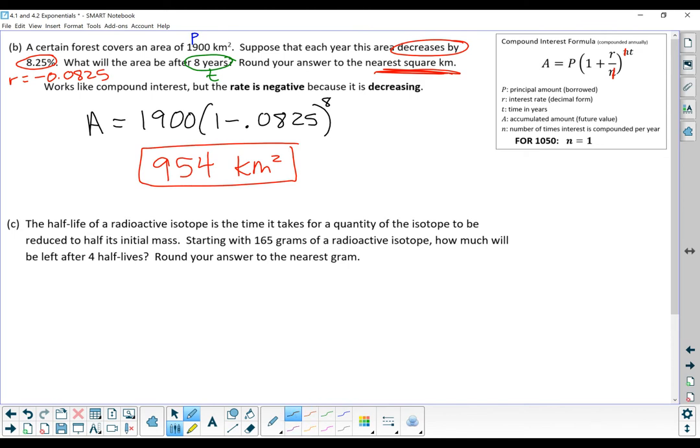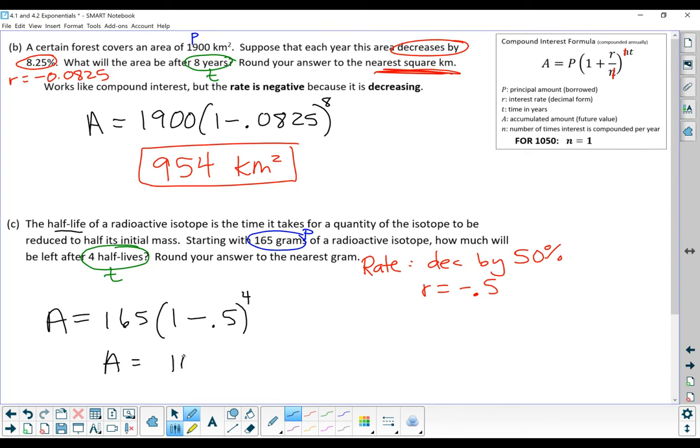One last variation to be aware of is it'll have some come up that talk about half-life. The half-life of an isotope is the time it takes to reduce to half its initial amount. Starting with 165 grams, how much will be left after four half-lives? So the T is four here. The rate, because we're talking about half-lives, is that it's decreasing by 50%. You kind of have to know that that's what half-life means, is that it's decreasing by 50%. So our R value is negative 0.5. The accumulated amount is 165 multiplied by 1 minus 0.5 to the power of 4, which gives us 10.3125. Rounding to the nearest gram, that is 10 grams.